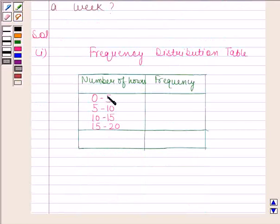Remember that 5 is not included in this interval. It is included in the next interval. Similarly, 10 is not included in this interval, it is included in the next interval. And also, 15 is not included in this interval. It is included in the next interval. Now, keeping this in mind, we will fill the frequency column.